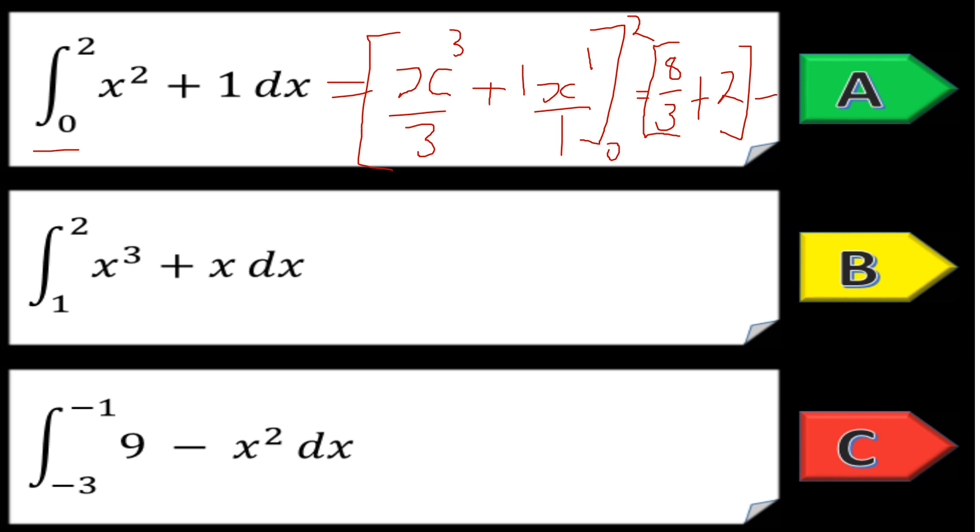Subtract the second limit. When it's zero, that will be zero, so subtract zero. Two as a fraction is equal to six thirds, so that'll be eight thirds plus six thirds, which is fourteen thirds.